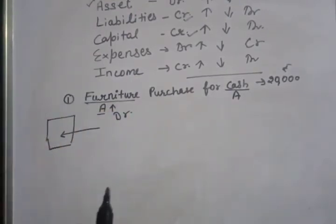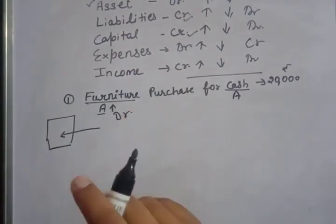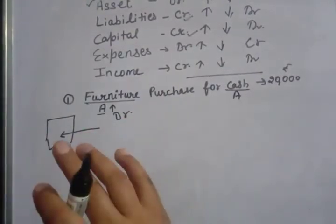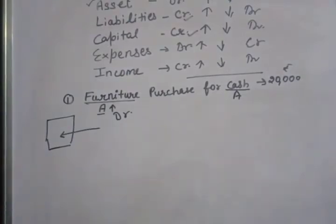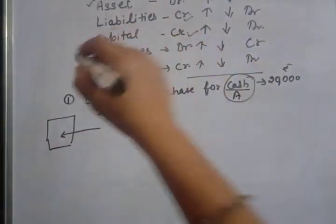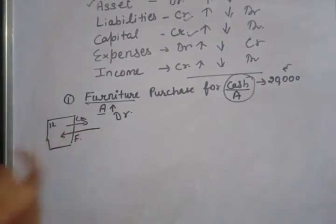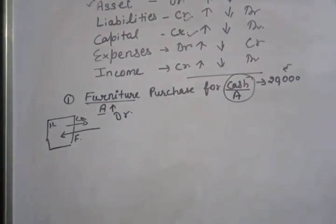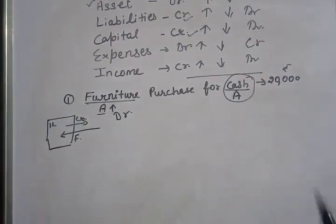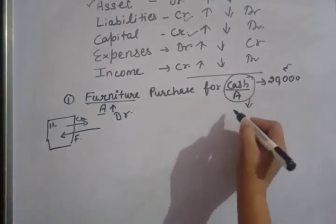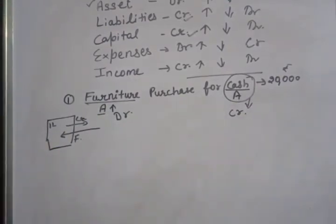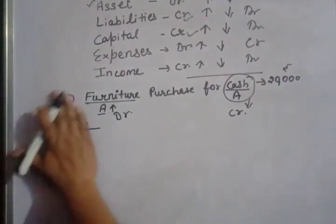In every transaction there will be two accounts and two aspects. If there is a debit, then the other thing must be credit. Next is cash. You bought furniture, but cash is going to go out. Your cash decreases. Cash is an asset, and when an asset decreases, it goes on the credit side. So cash account is credited.